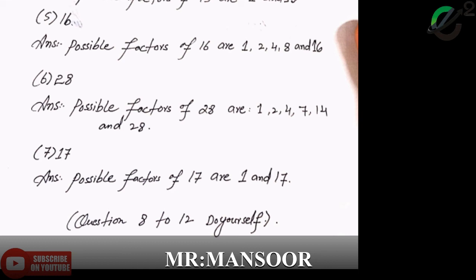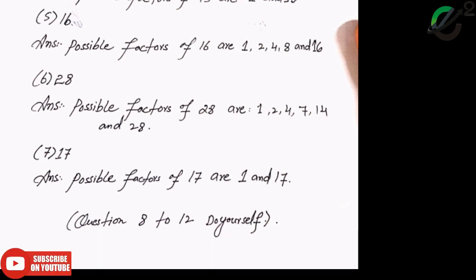Question number 7: possible factors of 17. We need to find the possible factors of 17. Answer: possible factors of 17 are 1 and 17.